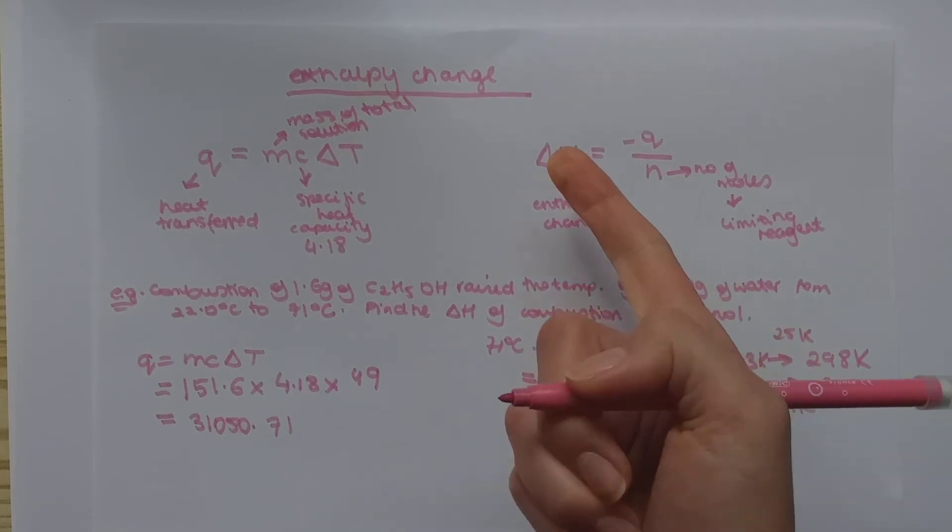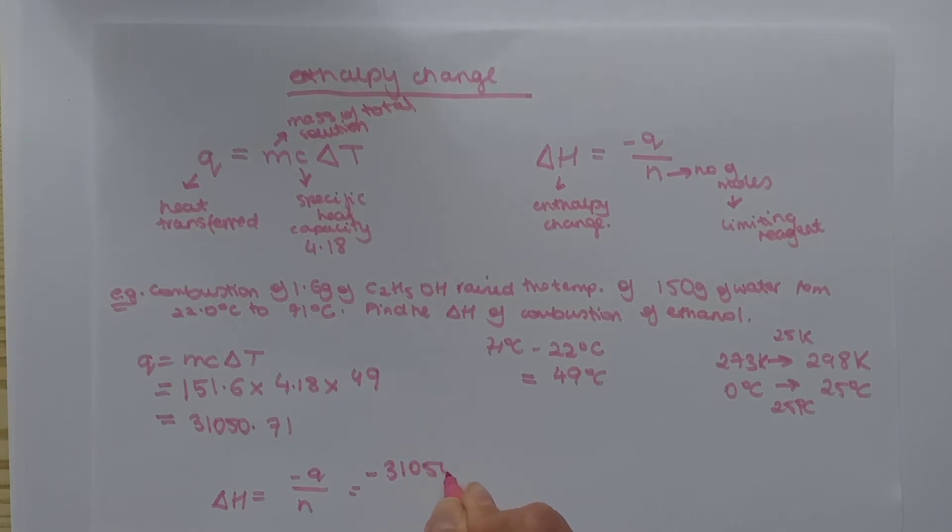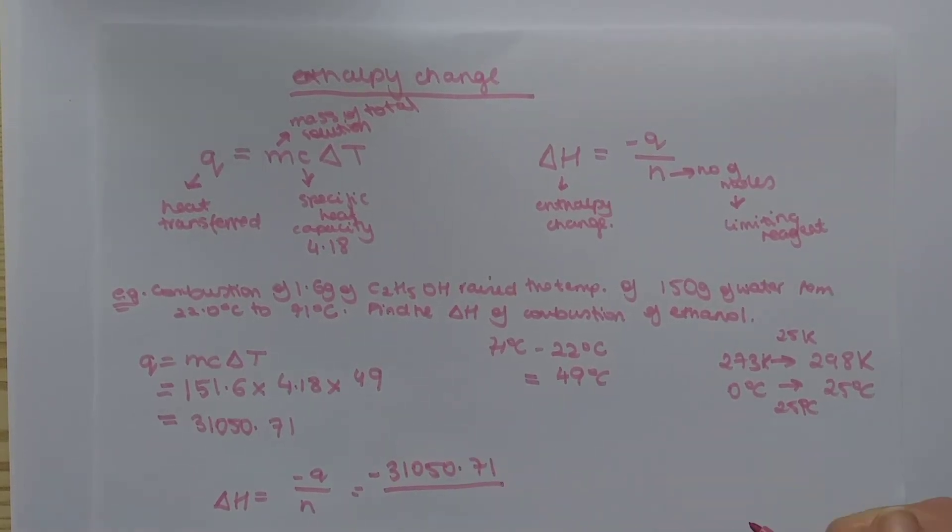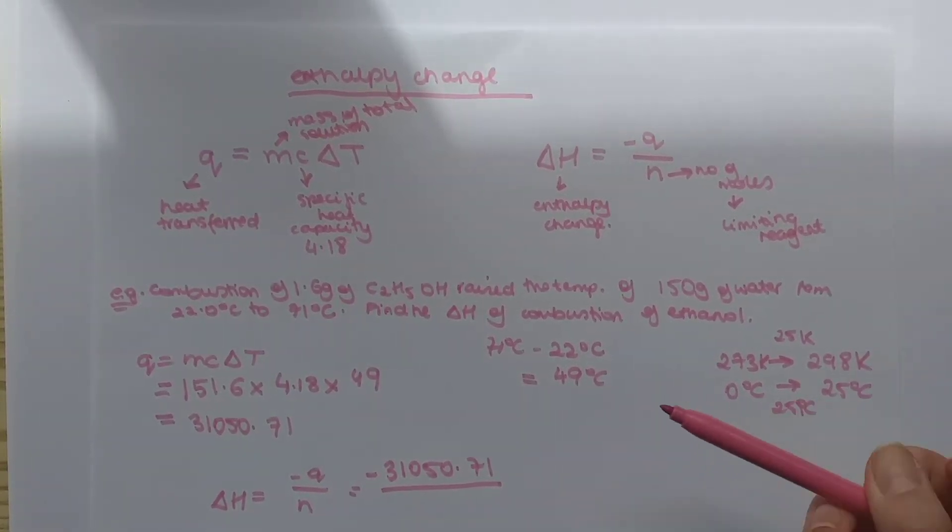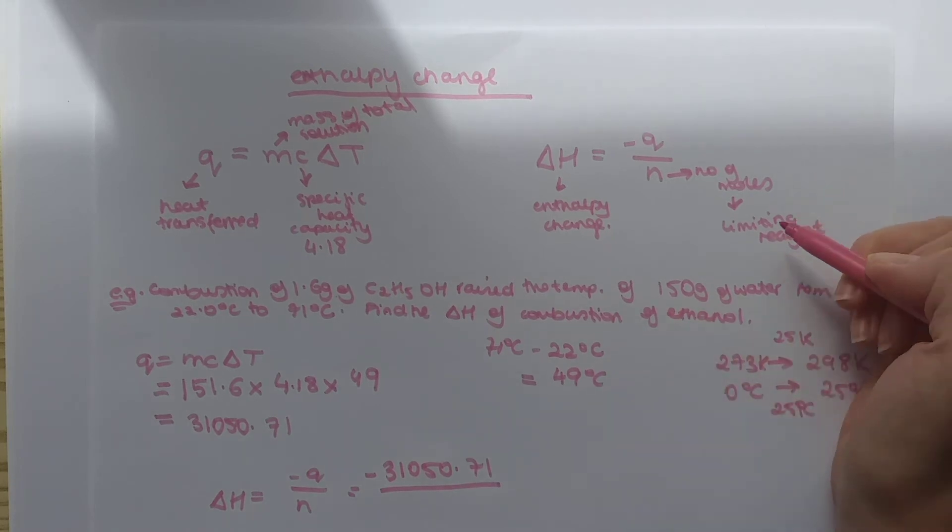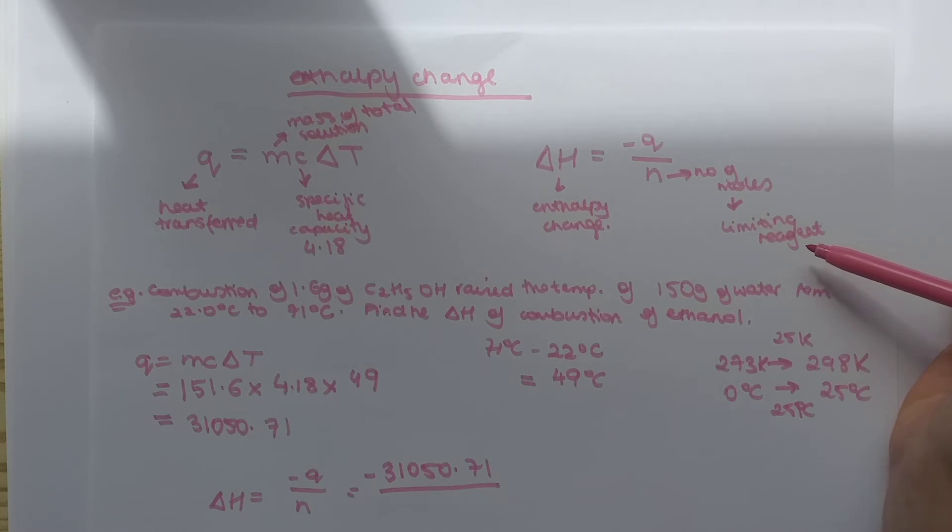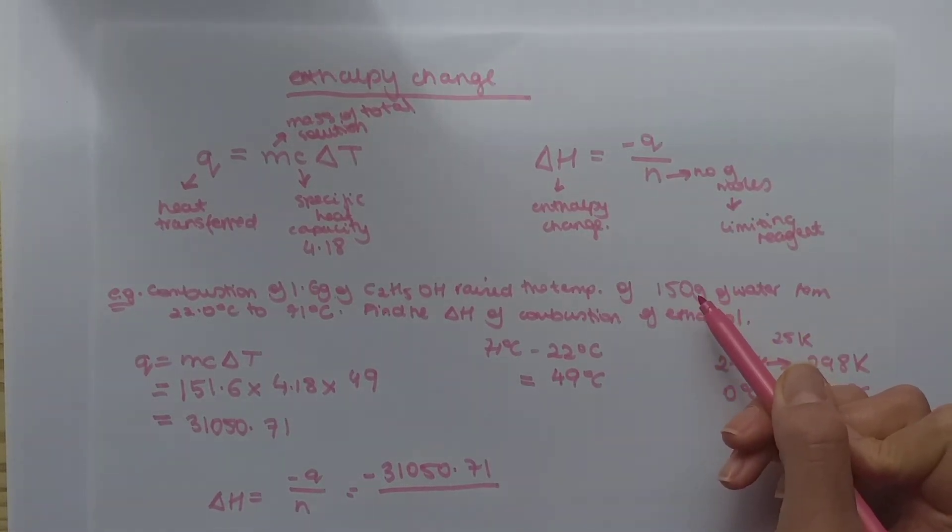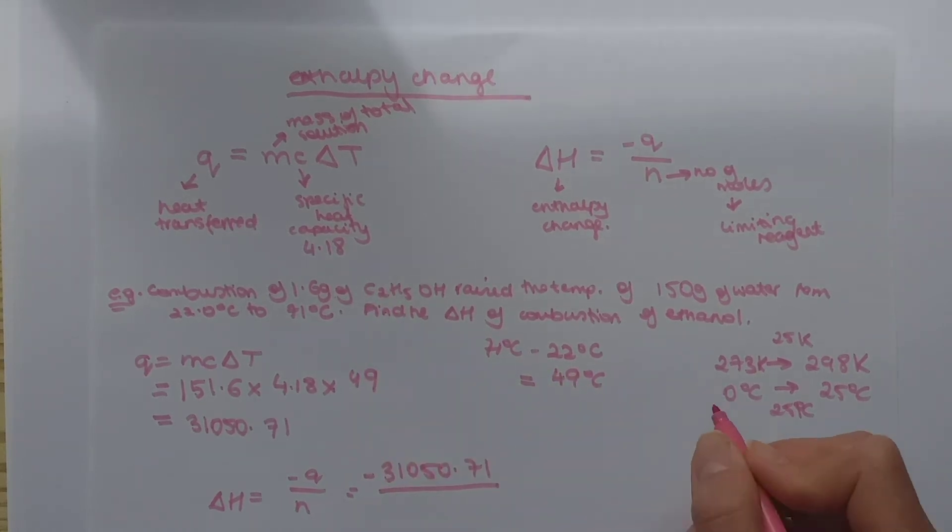The next step you take is to find the enthalpy change. Enthalpy change is the minus Q over N. So we have Q. We put a minus in front, so it's minus 31050.71. And N, do we know the N? No, we don't. So, we have to calculate it. We have the mass. But now, which mass do we use? As I told you before, we use the mass of the number of moles of the limiting reagent. As you can see, we have more water than we have our ethanol. Therefore, ethanol will be our limiting reagent.